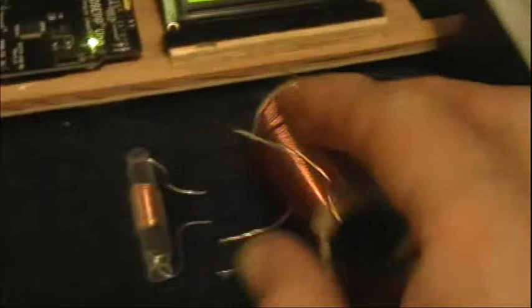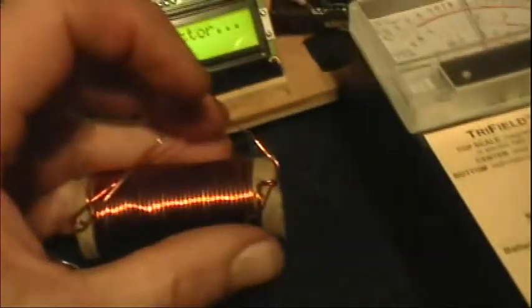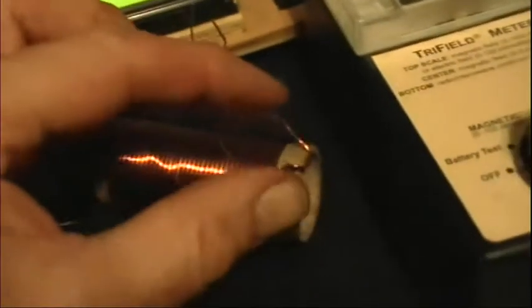So now, that's just the one winding. So now if I take and make a hairpin bifiler out of it, by taking the two windings at one end of this coil here, and connecting them together.